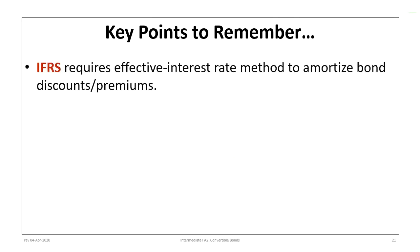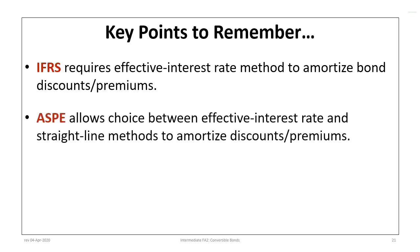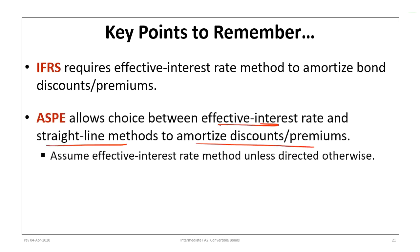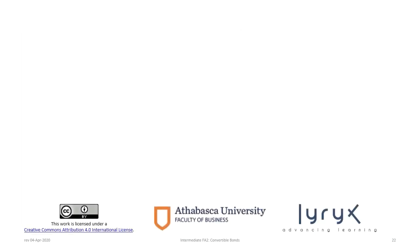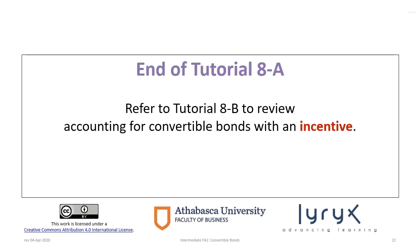IFRS requires the effective interest rate method to amortize bond discounts and premiums. ASPE does allow a choice between the effective rate and straight-line methods, but we illustrated using the effective interest rate, as it is the more complicated of the two and the preferred approach. This concludes Tutorial 8A on accounting for convertible bonds without any incentives. You can now refer to Tutorial 8B to review accounting for convertible bonds with an incentive, which is a little more complicated.